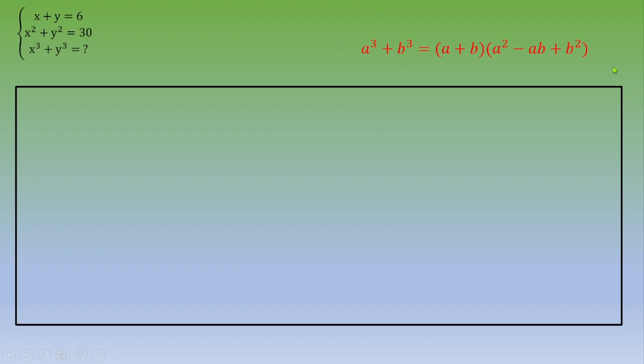If you transpose this identity to this exercise, this is x cubed plus y cubed equals x plus y times x squared minus xy plus y squared.